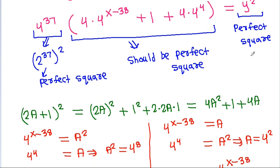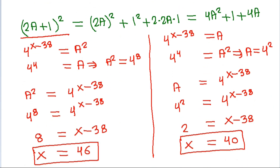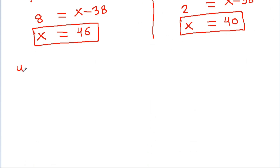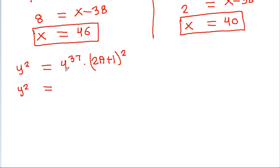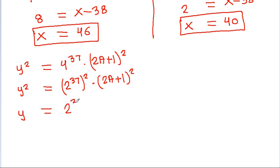And we have y squared is equal to 4 power 37 times 2a plus 1 squared. And y squared is equal to 4 power 37, which is 2 power 37 squared times 2a plus 1 squared. So y will be equal to 2 power 37 times 2a plus 1.